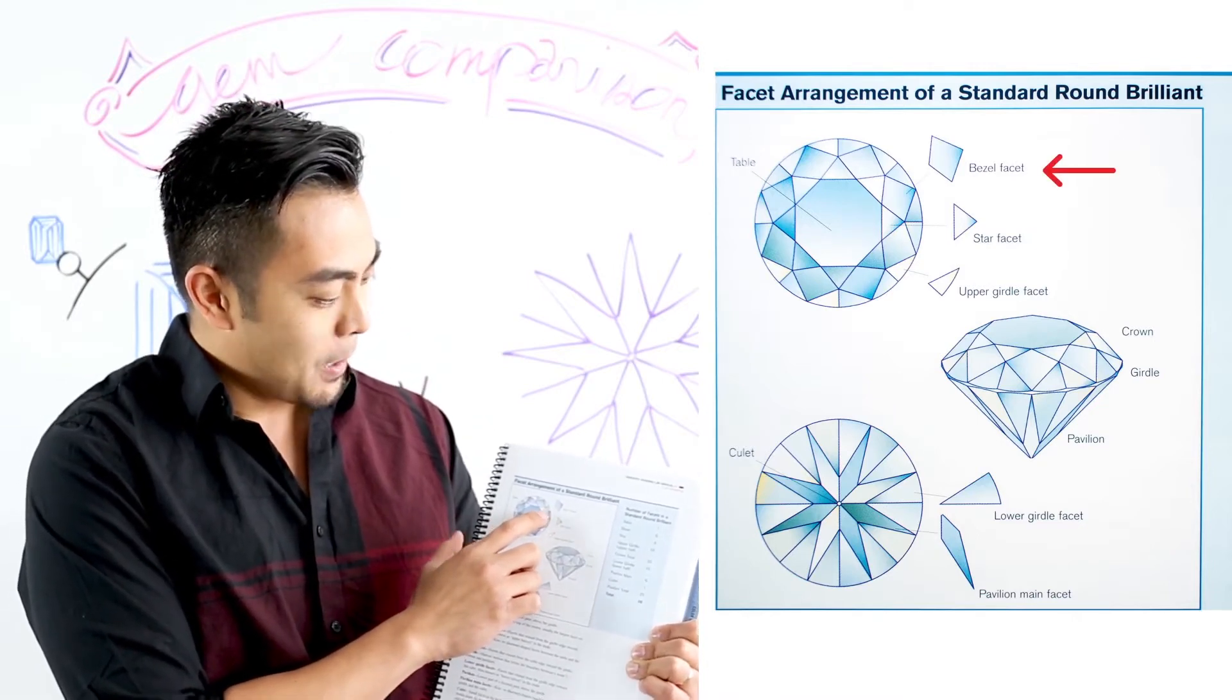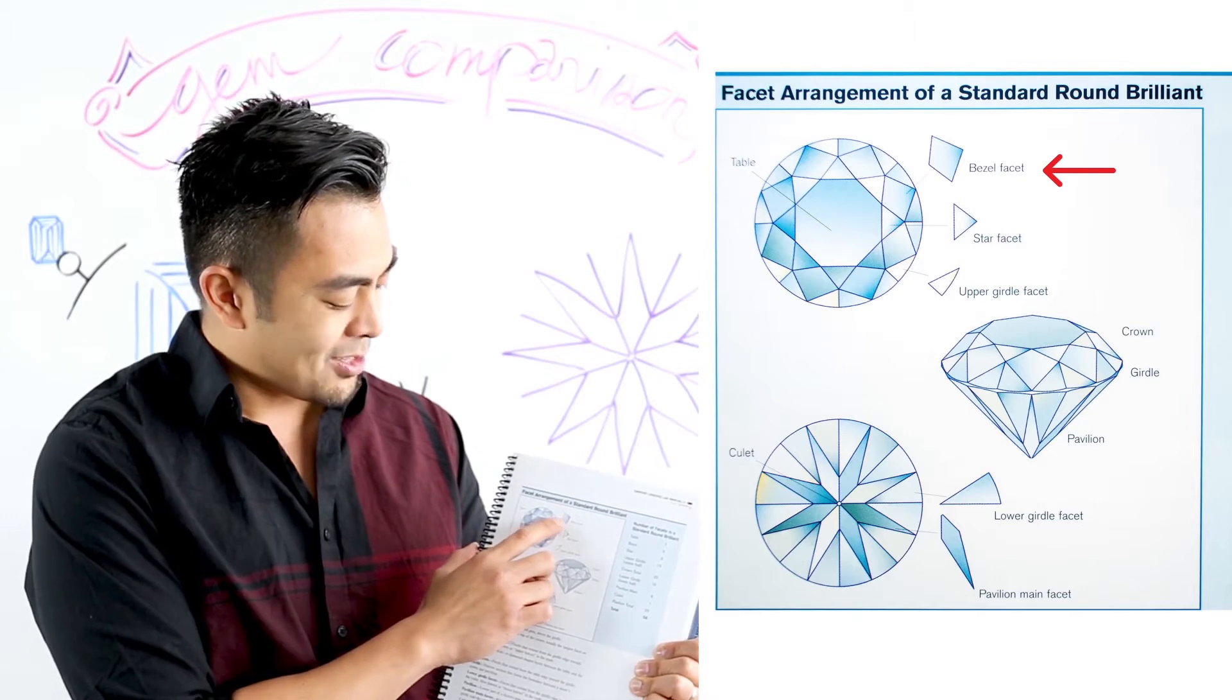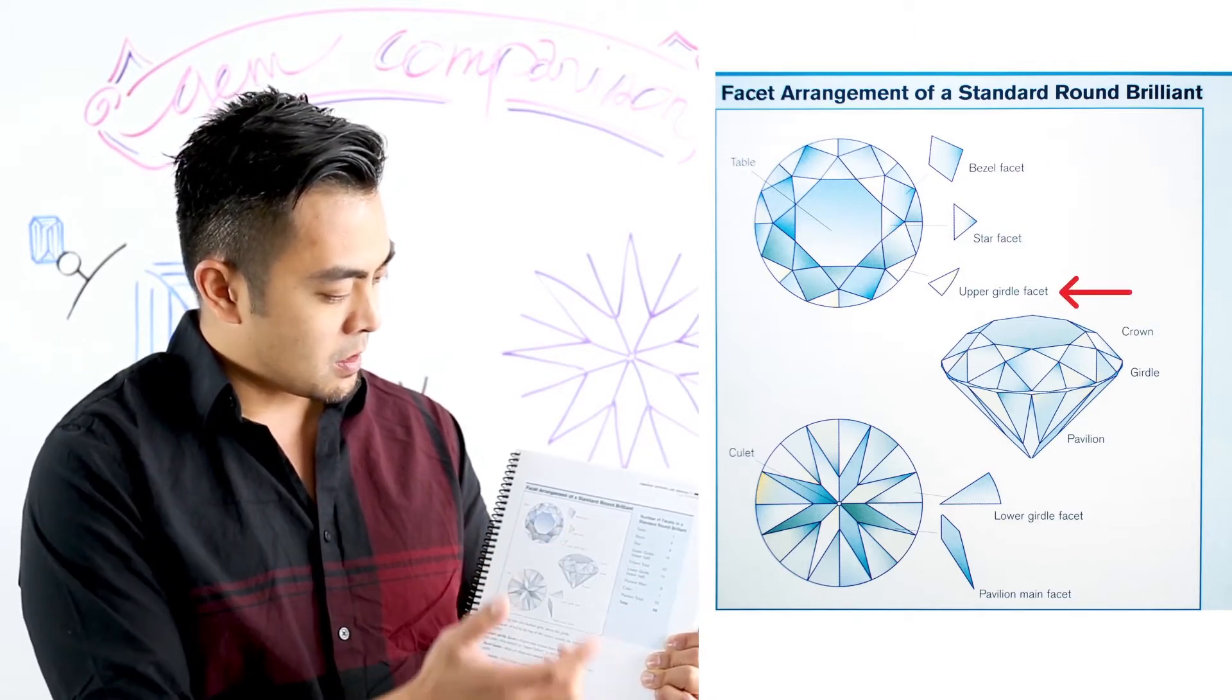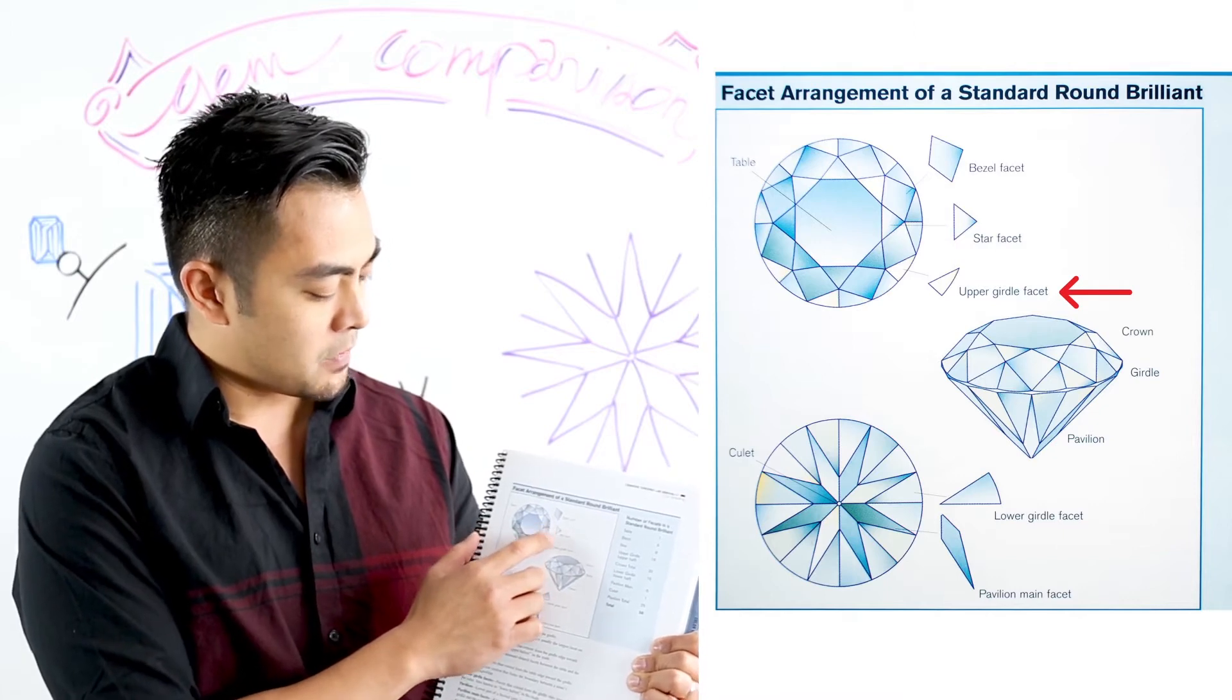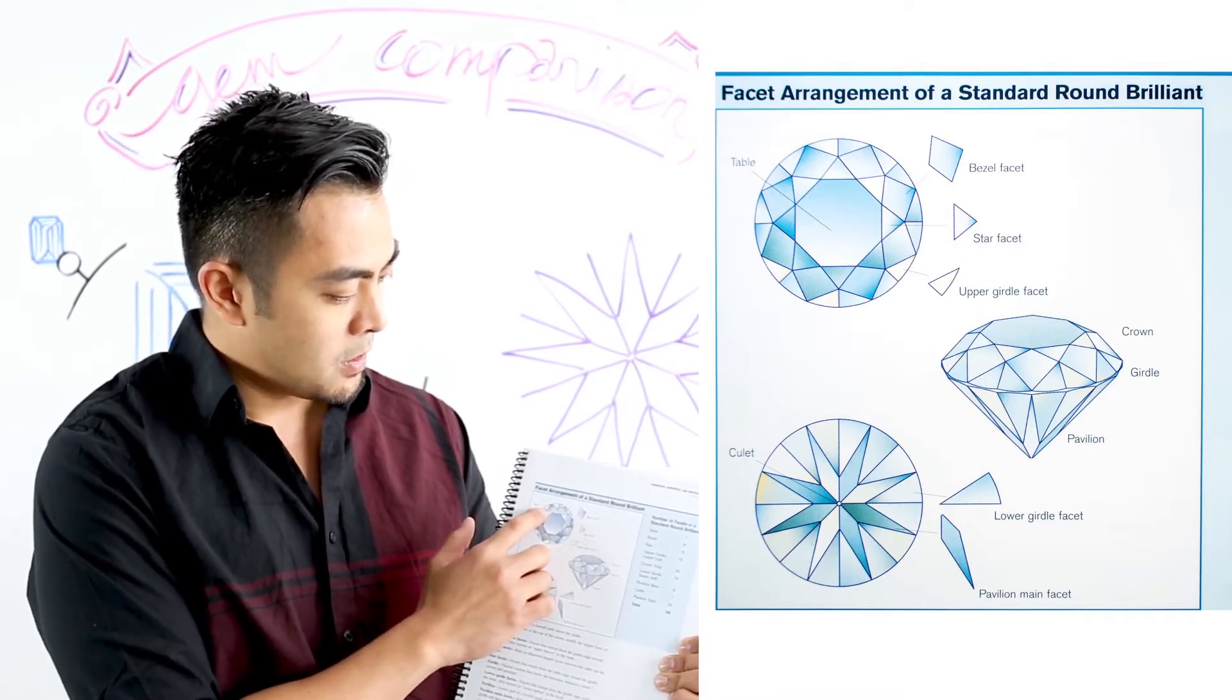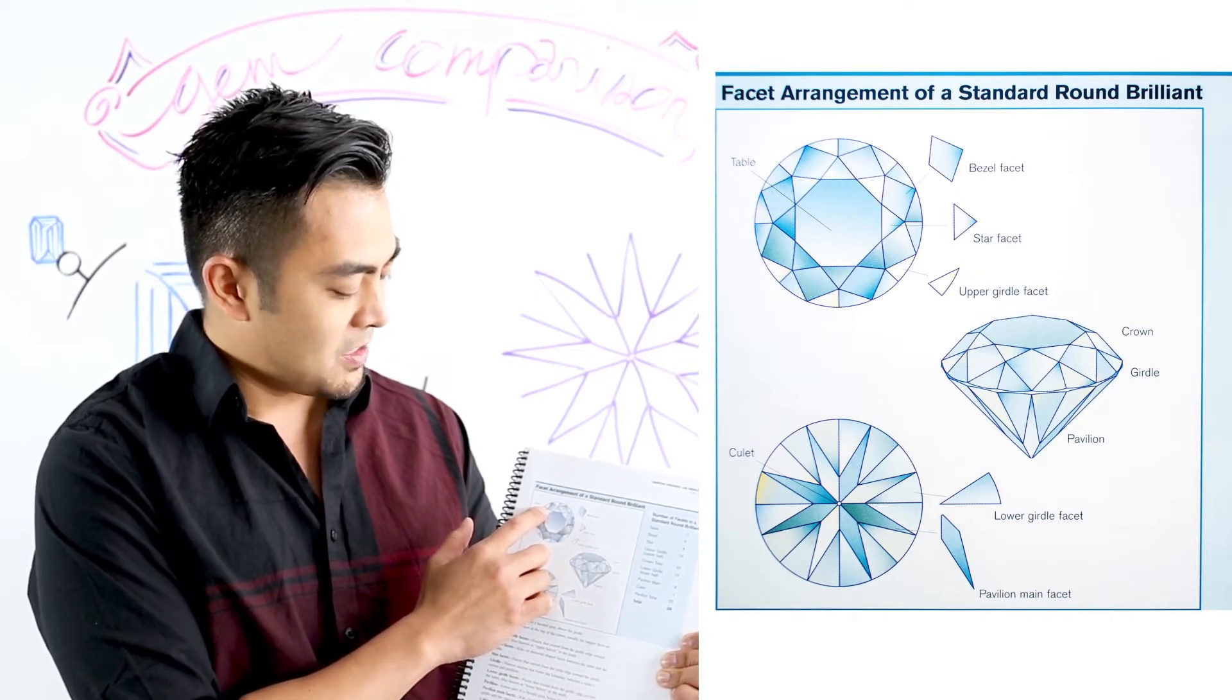And then there's another eight bezel facets next to that, and then there's 16 upper girdle facets. The reason why it's called upper girdle facets is because it's right above the girdle. So these are all the facets on the crown or the top portion of the gemstone.